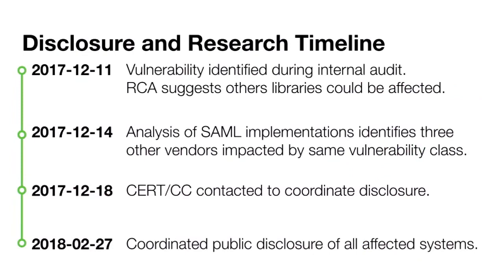This is the timeline of our findings and research. I identified the first issue during an internal audit last December. Three days after that, while simultaneously sorting out what a good patch would look like, we identified three other vendors that were also affected. Since we were dealing with multiple affected vendors, we opted to work with CertCC to coordinate disclosure across these vendors, as well as other common SAML IDPs and SPs. Coordinated public disclosure was done around two months after initial contact to CertCC, which is about a month earlier than the initial suggested deadline.